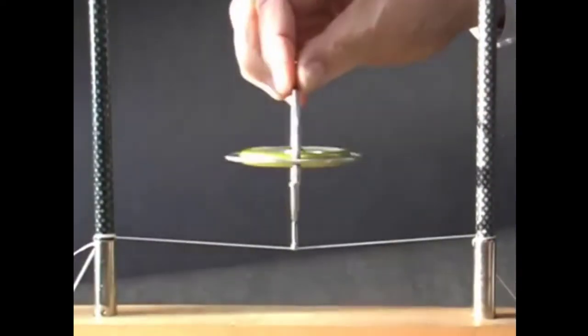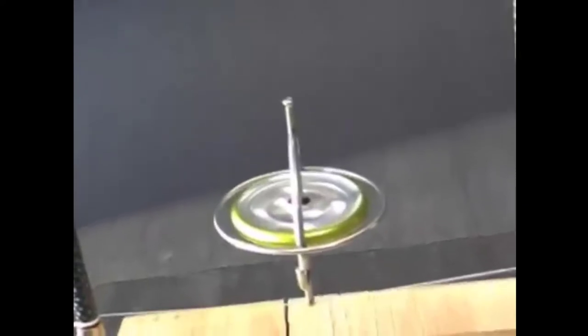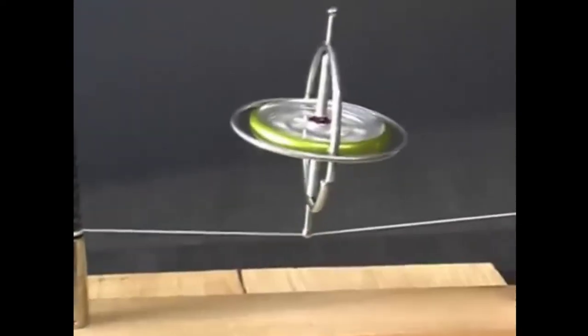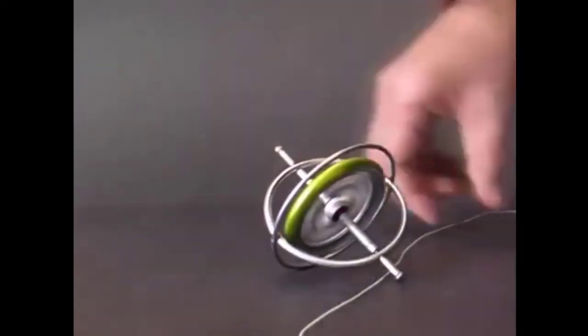A spinning gyroscope will balance on a string. You can even lift the gyroscope with a string looped around one end.